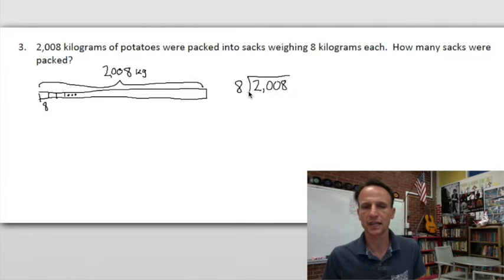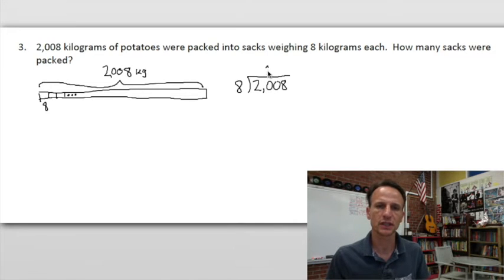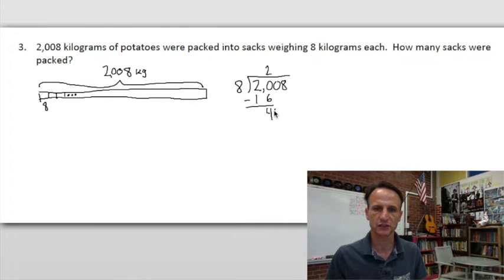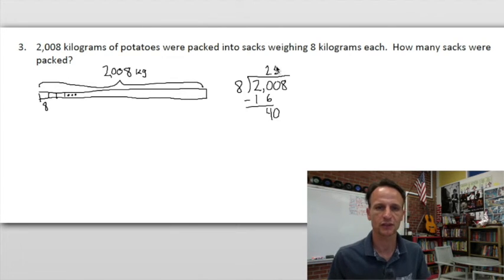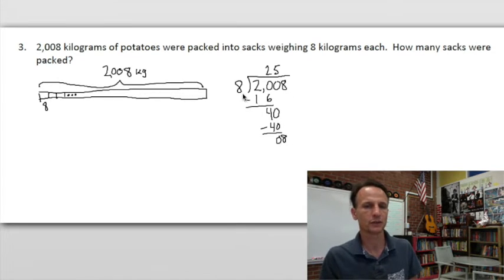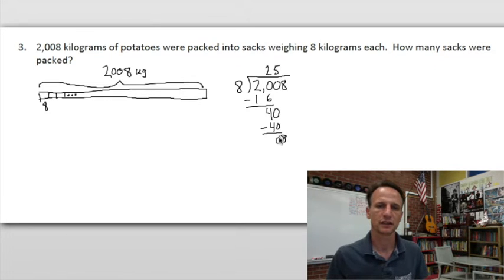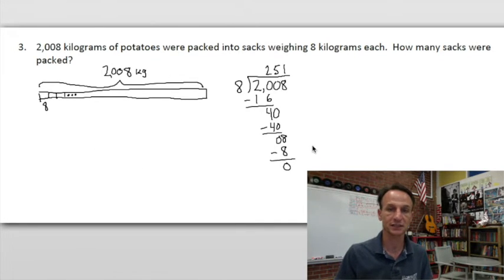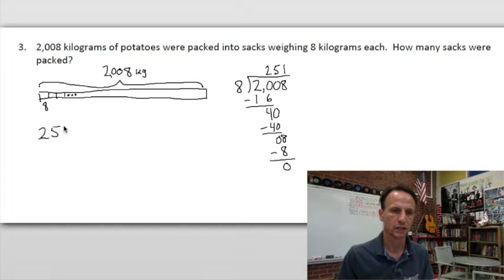How many eights in 20? Two, because two times eight is 16. Subtract — we're left with four hundreds and zero tens to divide. How many eights in 40? Five, because five times eight is 40. Subtracting, we have zero. We still have eight kilograms left — how many eights in eight? One, of course. Subtracting — no remainder. So 251 sacks were packed.